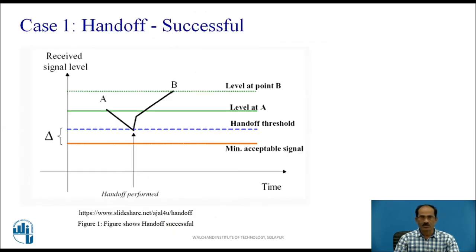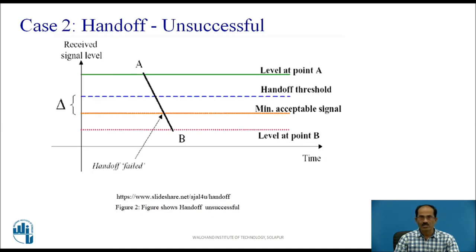Case 1 — hand-off successful. The diagram shows a successful hand-off in detail. The value of delta is large enough so that when the received signal power reaches the hand-off threshold, the MSC (Mobile Switching Center) initiates the hand-off. Case 2 — hand-off unsuccessful. In this case, the MSC was unable to perform the hand-off before the signal level dropped below the minimum usable level, and so the call was lost.